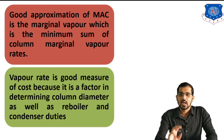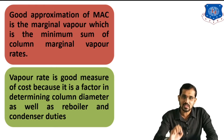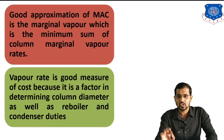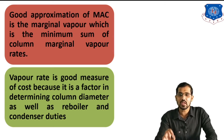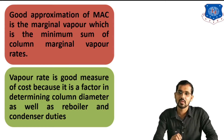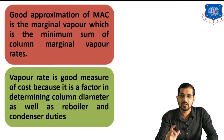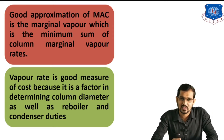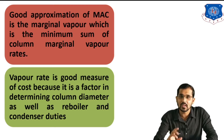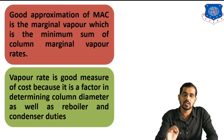Vapor rate is a good measure of cost because it is a factor in determining the column diameter as well as reboiler and condenser duties. Here we are using vapor rate as the good measure of cost because it factors into column design and reboiler and condenser duties. If there are adverse vapor flow conditions, there may be a possibility of flooding, weeping, or dumping. That is why vapor flow rate is very important in any analysis.